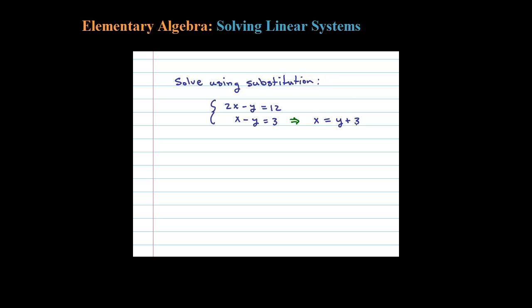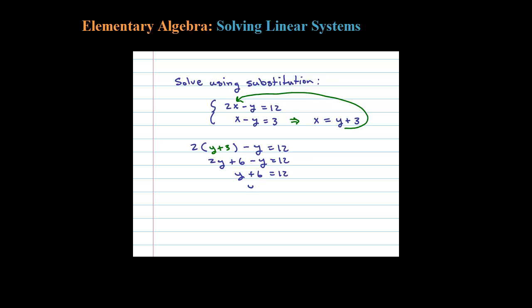From that, I'm going to substitute x into the other equation — this is the substitution step. So 2 times x minus y equals 12. We just figured out what x was from the bottom equation: x equals y plus 3. Now the only variable left is y. So 2y plus 6 minus y equals 12. Same-side like terms: 2y minus y is y, giving us y plus 6 equals 12.